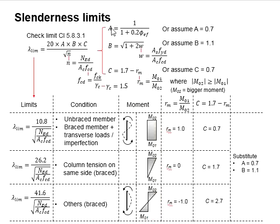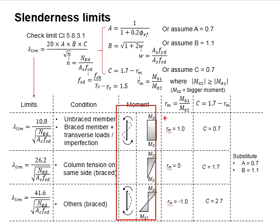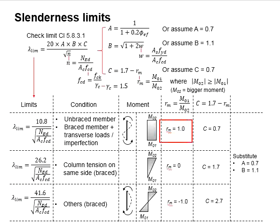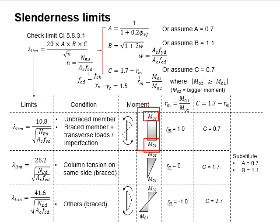The moment conditions and their corresponding diagrams are indicated here. These different conditions of moment will affect RM, which subsequently affects C in the slenderness limit equation. RM is determined by dividing M01 by M02, where M01 normally refers to the smaller moment in comparison to the larger moment M02. In this case, when M01 equals M02, RM will be equal to 1.0.